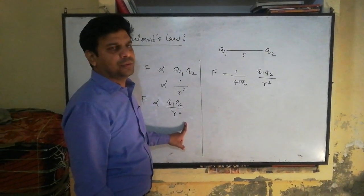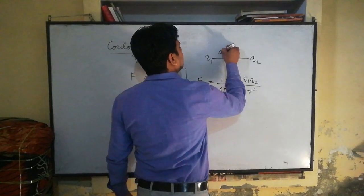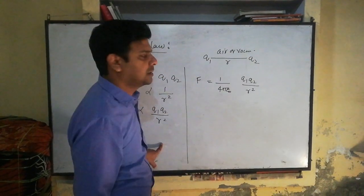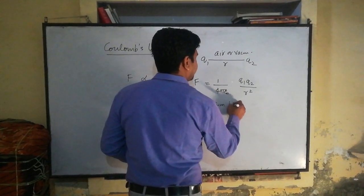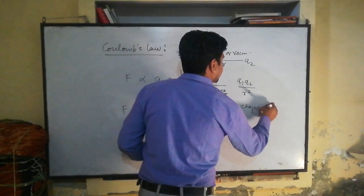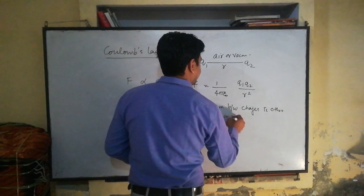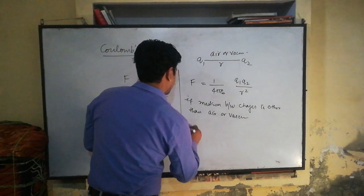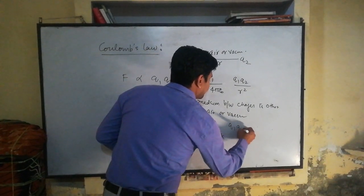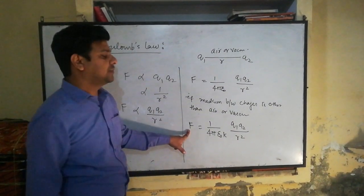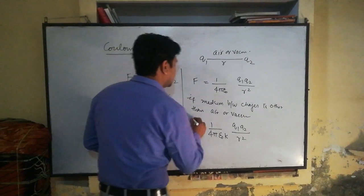It should be noted that in this law, the medium between both charges is assumed to be air or vacuum. If the medium between charges is other than air or vacuum, then we use the formula: F is equal to 1 over 4π ε₀ times Q1 Q2 over R squared, modified for that medium. This is Coulomb's Law.